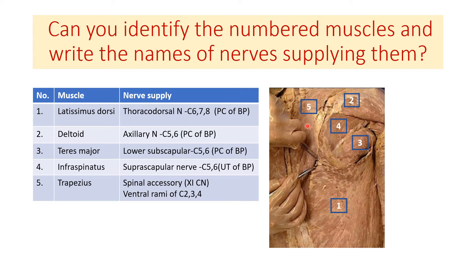If you observe, the majority are being supplied by branches from the posterior cord of the brachial plexus, then by the suprascapular nerve coming from the upper trunk of the brachial plexus, and one is supplied by the cranial nerve — that is the spinal accessory nerve.